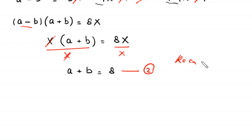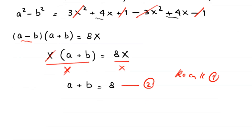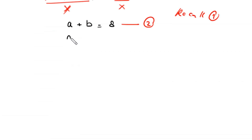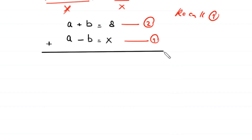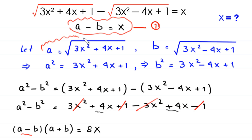We recall equation number 1, which is a minus b is equal to x. We add equations 1 and 2 together. The positive b and negative b cancel, and a plus a becomes 2 times a, equal to x plus 8.